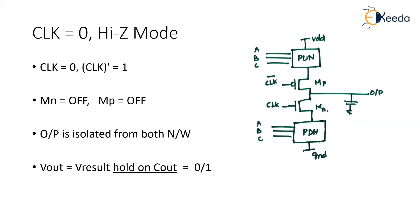Now, when I give clock equal to 0, I have mentioned it as high-Z mode — high impedance mode. When clock is 0, clock bar is equal to 1. So 0 is given to the N-MOSFET and 1 is given to the P-MOSFET. 0 given to the N-MOSFET will turn off the device, and 1 given to the P-MOSFET will also turn off the device. So both MP and MN are OFF or open — there is no connection between the pull-up network and pull-down network.